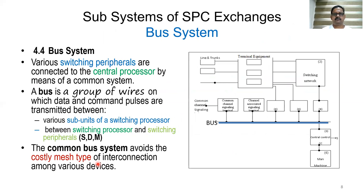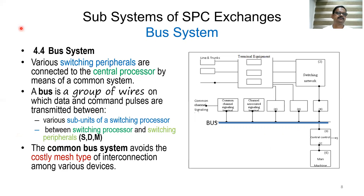We will now study the bus system, which is the common path for different network elements or subsystems. The scanner, distributor, and marker are connected to the central processor by means of a common bus system. A bus is nothing but a group of wires on which data and command pulses are transmitted.